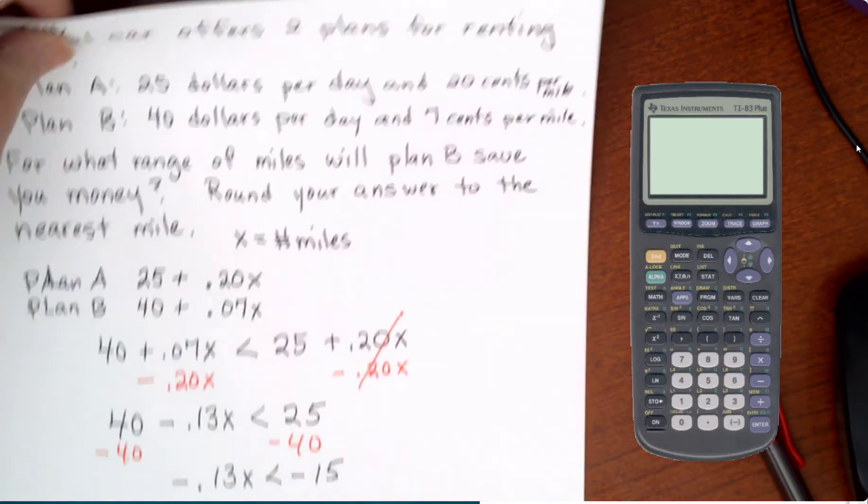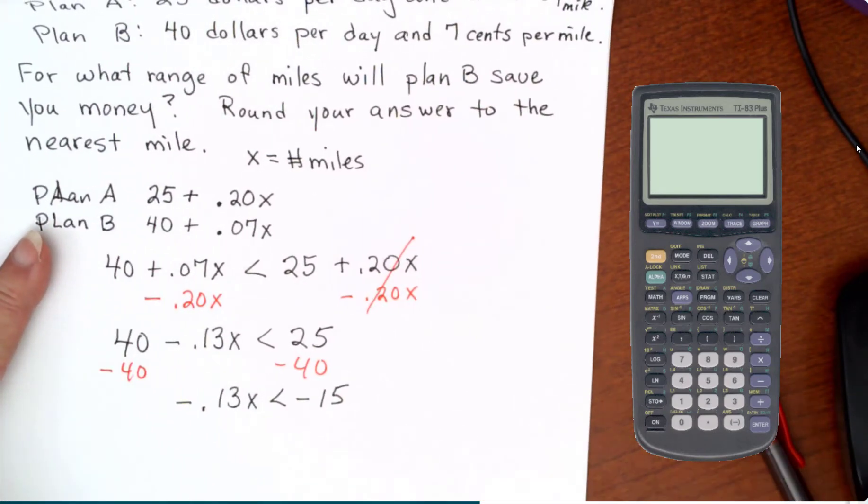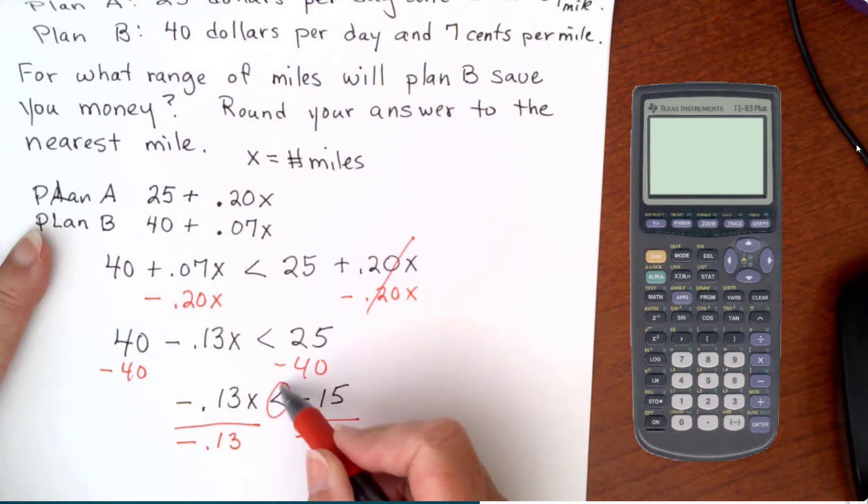And then we have one more step. We have to divide by the coefficient of x. It is negative, so it's going to make our inequality symbol flip. So negative 0.13. This is going to flip.